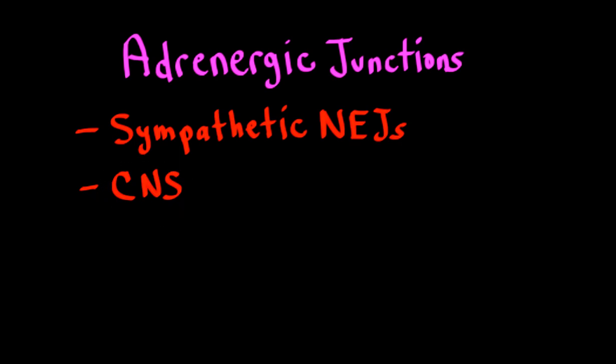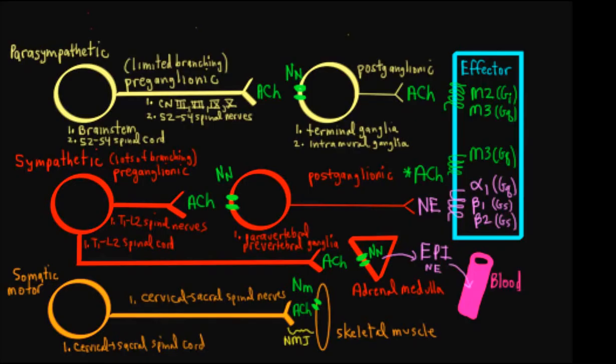Let's take a look at a comparison of the parasympathetic, sympathetic, and somatic motor systems, and I just want to draw our attention to the purple junctions here and the purple receptors. That's our adrenergic junction right there between the postganglionic sympathetic neurons and the effector organs.